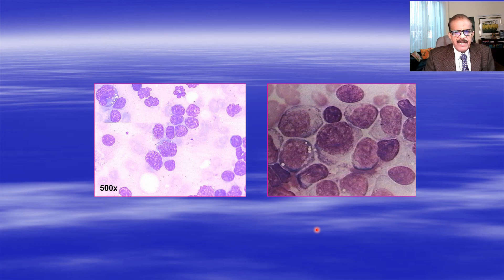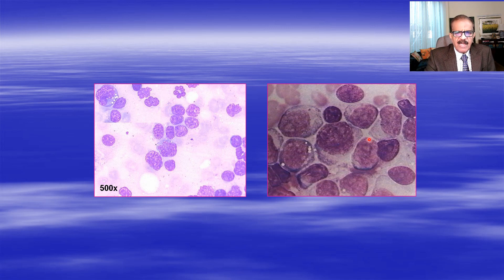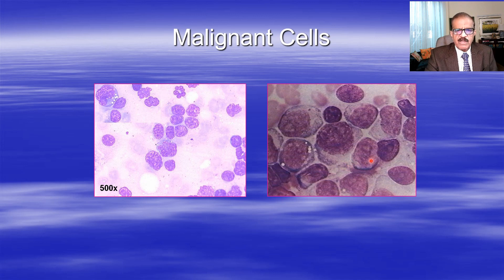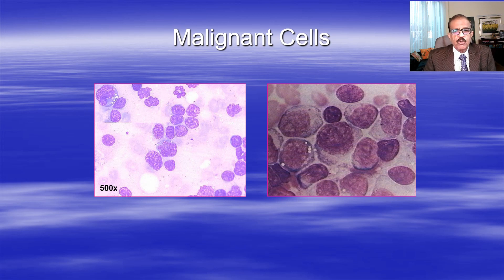Now suppose you had sent the pleural fluid for examination and this is the cytology you got. These big nuclei and ugly-looking cells - big huge cells with big nuclei - they definitely look malignant. The exact origin requires special staining and only a trained histopathologist can tell if these are pleural malignant cells or from bronchial, breast, or prostate cancer. If malignancy has affected the pleura, it is considered to be Stage 4, meaning it is beyond the possibility of surgical resection or cure.